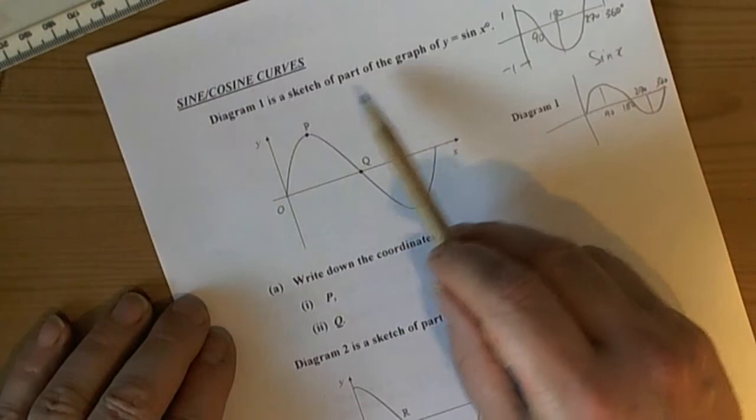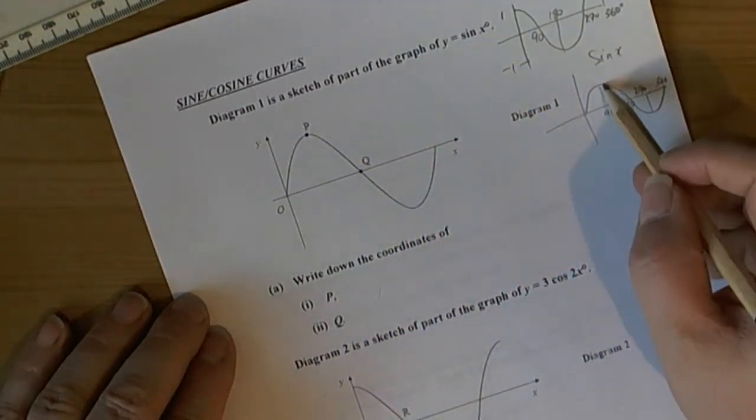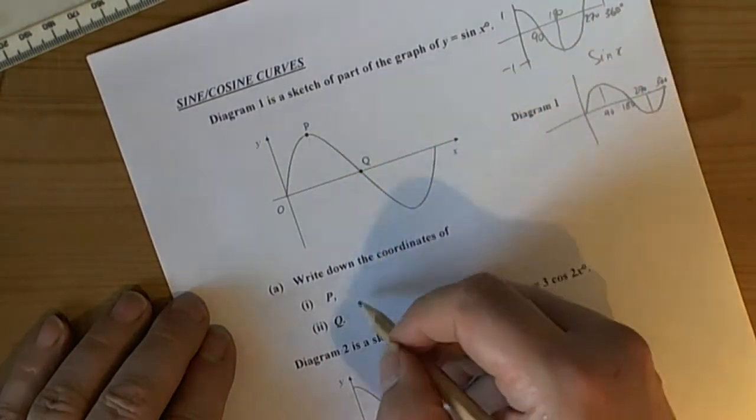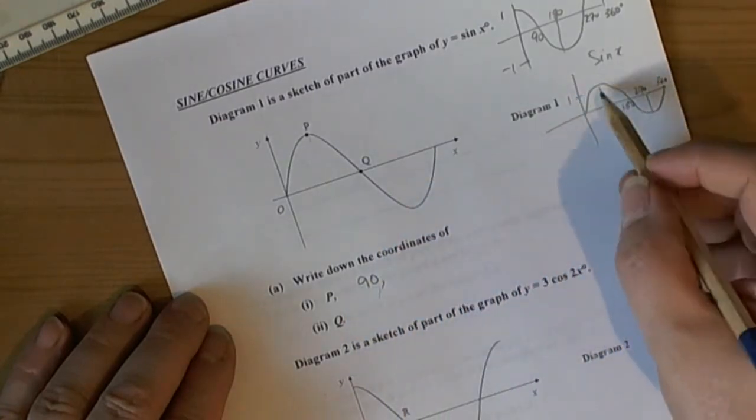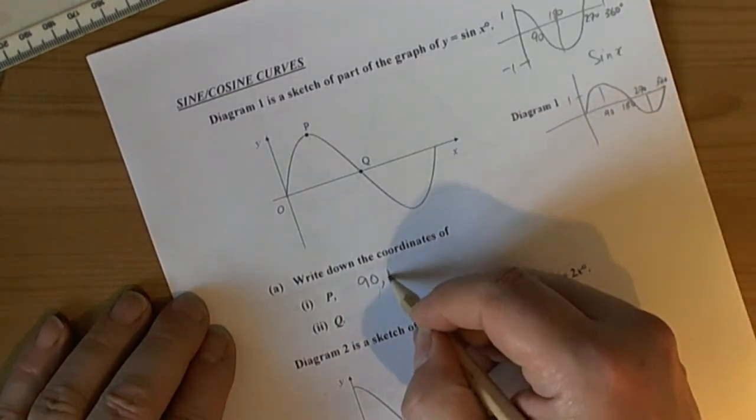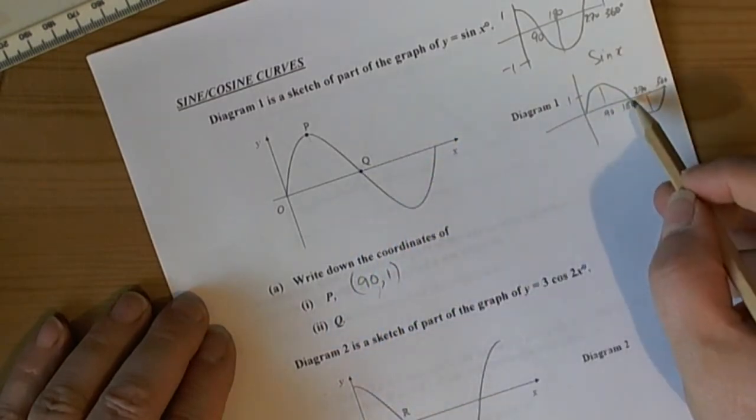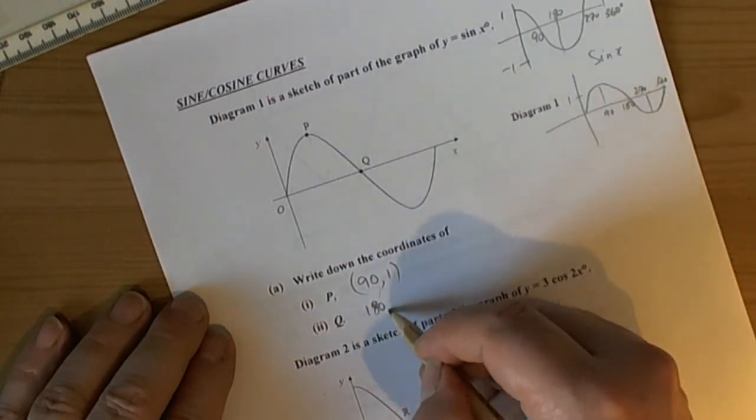So what have we been told? We've got a sine curve, they want to get the coordinates of P. Well P is the maximum point at the vertex at 90 so the coordinate would be 90 and the maximum value of the sine curve, the ordinary sine curve is 1 so the coordinate will be (90, 1). The Q point is where the curve crosses the x axis at 0 there so it's going to be (180, 0).